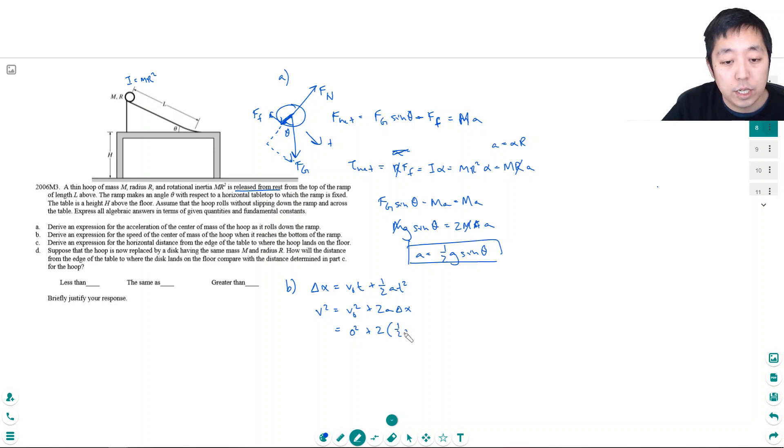a is one half g sin theta, and delta x is l. So v squared equals g sin theta l, and v equals the square root of gl sin theta.